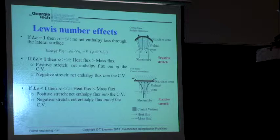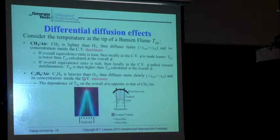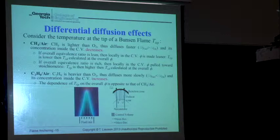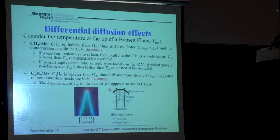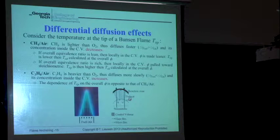For methane, which is also lighter than air, a nice illustration is the tip of a Bunsen flame, which has this negatively curved configuration. For methane-air, if you're losing more methane than air, starting out fuel-lean makes the mixture even leaner, so the flame strength at the tip would be weakened. For propane it would be strengthened if lean. If you're rich, the opposite happens.